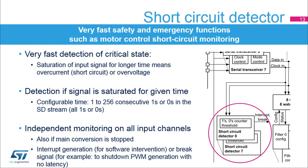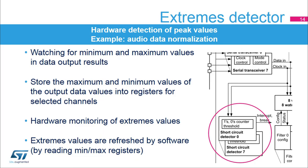The extremes detector monitors output results and stores the extreme values into minimum and maximum registers as well as the associated channel number. Monitoring of data for extremes is only performed on selected channels to ensure that channels do not mix different input levels. Stored extreme values are refreshed each time the values are read in the register.